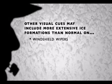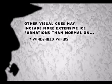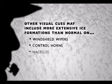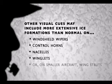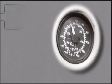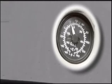Other visual cues of SLD may also include unusual or more extensive ice formations than normal on windshield wipers, control horns, nacelles, wing struts, or on smaller aircraft, wing struts. Finally, visible rain or droplets that splash or splatter on impact below zero degrees C ambient air temperature are also signs of large droplet icing.